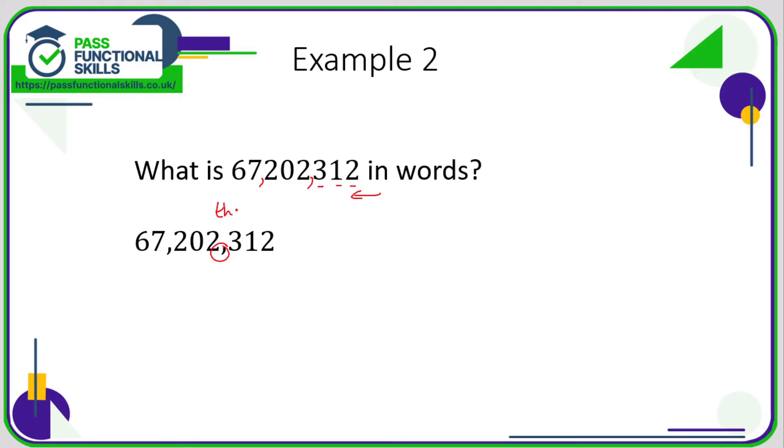So now we just need to read that number there with million after it, this number here with thousand after it, and then this number here. So that's going to be sixty-seven million, two hundred two thousand, three hundred and twelve.